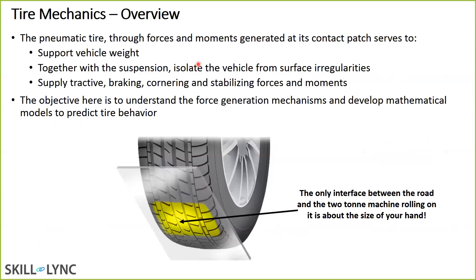Moving on to tires. The interesting part is that all the force and moment generation happens in a tiny section — the contact patch. All tire-road interaction happens in this small section. We'll look at how forces are transmitted from the road onto the tire and then from the tire into the suspension — how the tire reacts to all these forces. We'll be using a lot of mathematical models in MATLAB and Octave, because there are a lot of equations. This is very helpful if you want to do vehicle dynamics research.